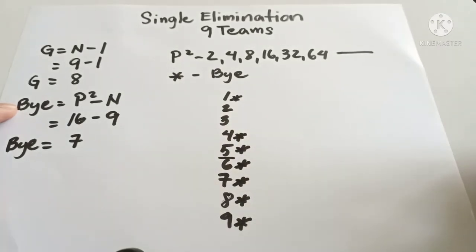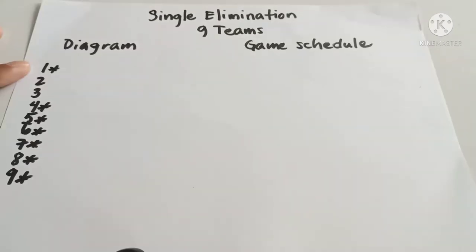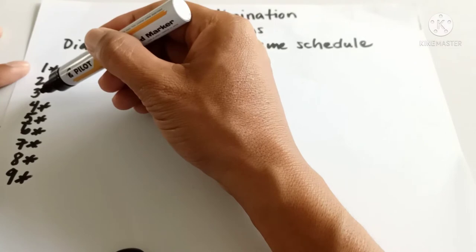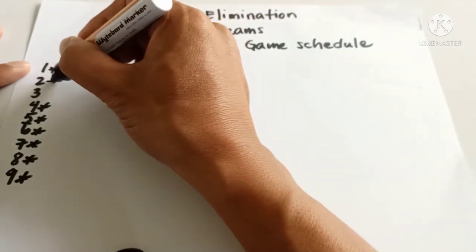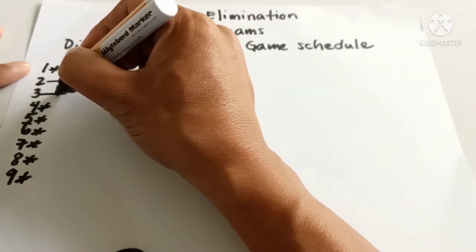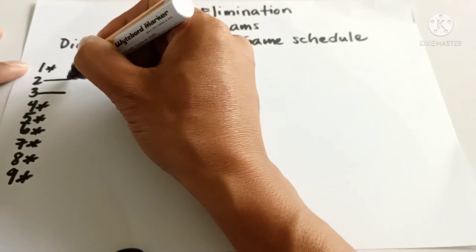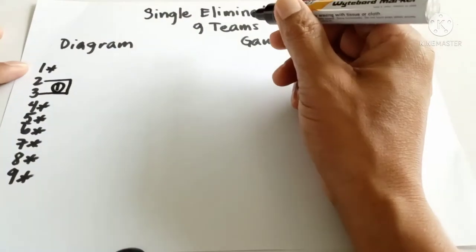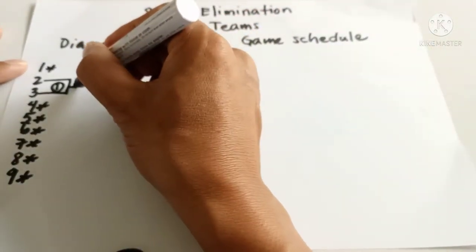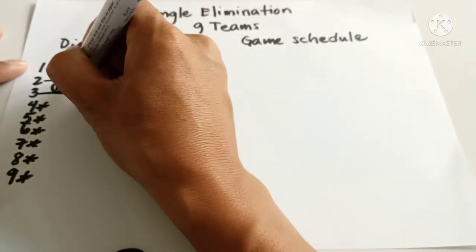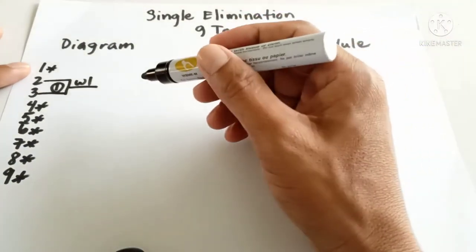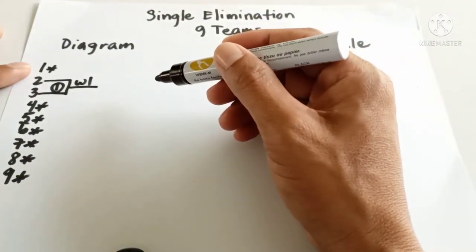Now let's proceed to the diagram and game schedule. Teams two and three will be playing in the first round — this will be game one. Let us have the result: winner one. Now the bye can play in the second round.